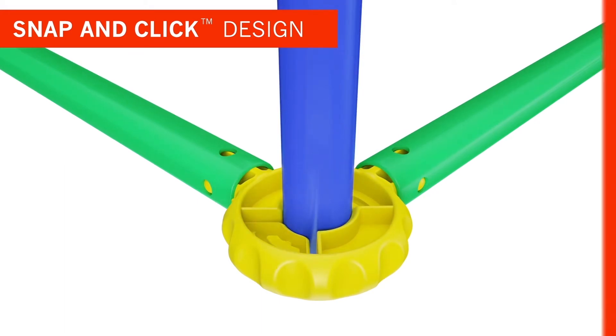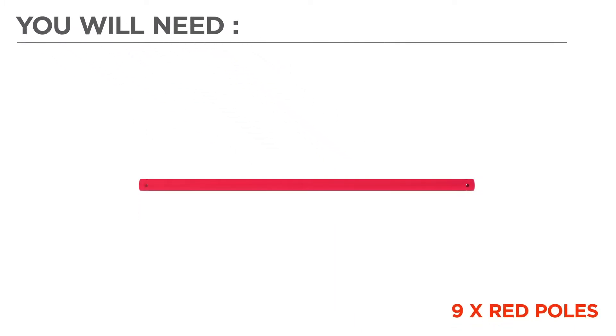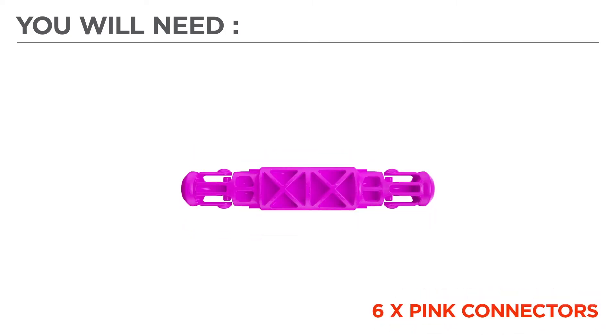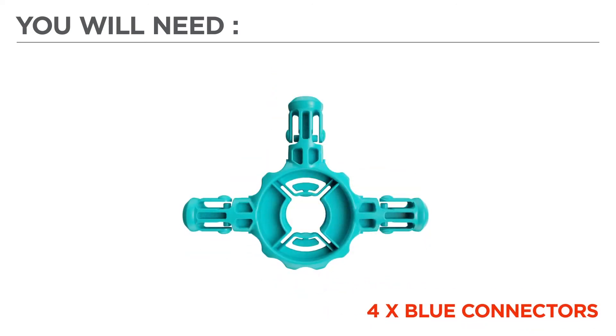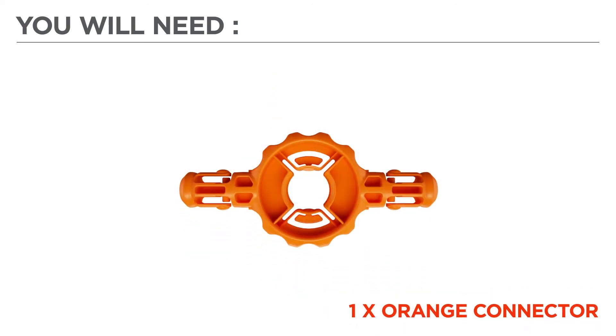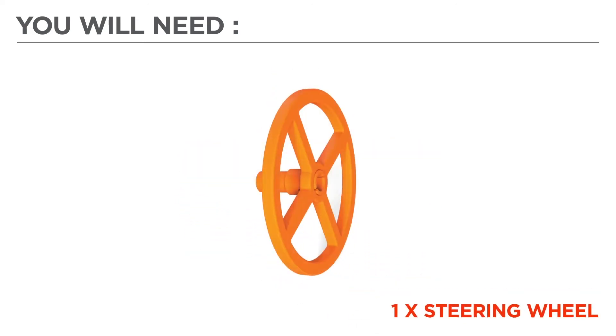Now before we begin, let's gather the color-coded parts needed for your build: 9 red poles, 14 navy poles, 4 magenta poles, 2 teal poles, 6 pink connectors, 10 yellow connectors, 4 blue connectors, 1 orange connector, 1 steering wheel, and 1 fabric cover.